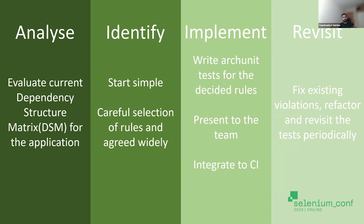Once you have the basic rules, write architecture tests for those decided rules, then present them to the team. People can say these are very basic architecture rules — we can add more down the line, and that's perfectly fine. Start with basic rules and integrate to CI so you get feedback for every pull request or merge request. Revisit these tests periodically, because your application architecture may evolve. Expand your architecture tests to cover new areas — that's where custom checks come in. Fix existing violations, refactor the code, and add more tests over time.